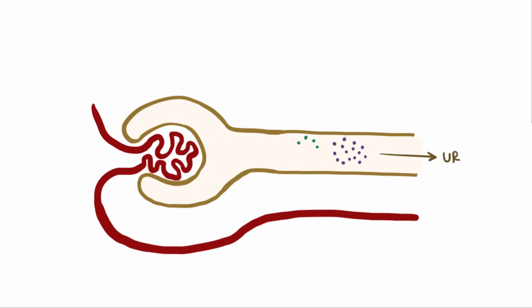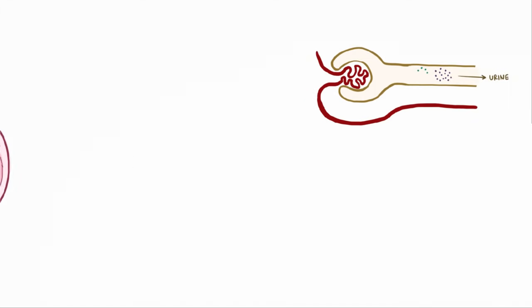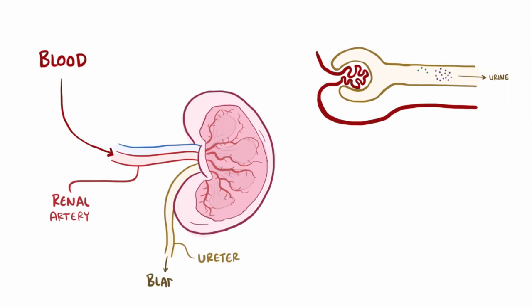Ultimately, that filtrate is turned into urine, and is excreted from the kidneys through the ureter into the bladder and peed away. Meanwhile, the filtered blood drains into the renal vein.